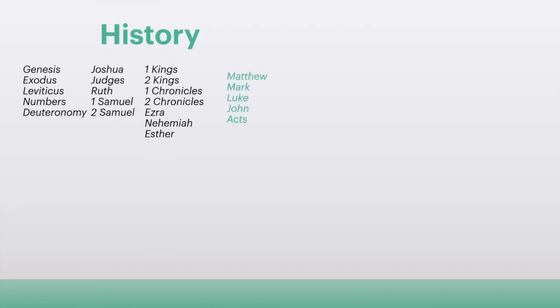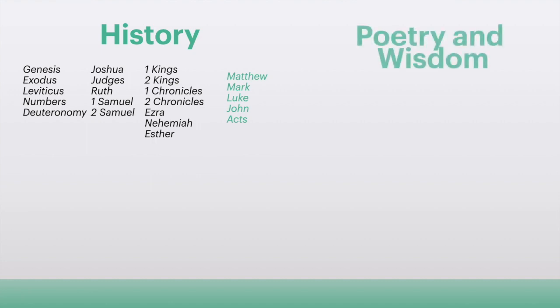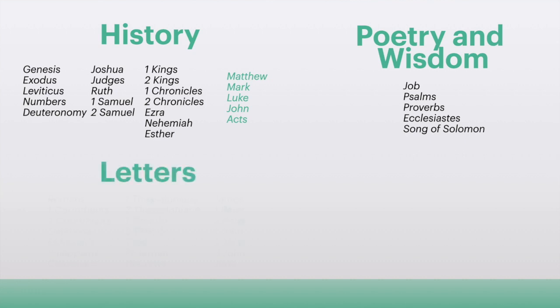There are also lots of different types of literature within the Bible, and it's good to know what type you're reading so you can understand it better. Many books are history books — things like Genesis, the Gospels, Acts, Joshua, and Ruth — facts, times, and places of people who actually existed. We've also got poetry, such as the Psalms, and wisdom literature such as Proverbs.